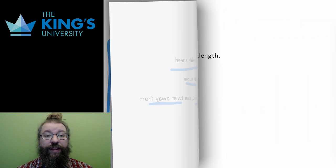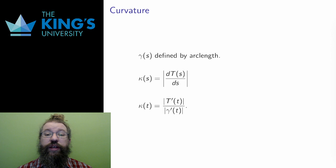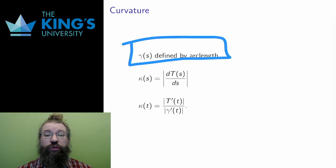So, let gamma be a parametric curve parametrized by arc length. I'll always write the arc length parametrization gamma of s instead of gamma of t. Then recall that capital T of s is the unit tangent.